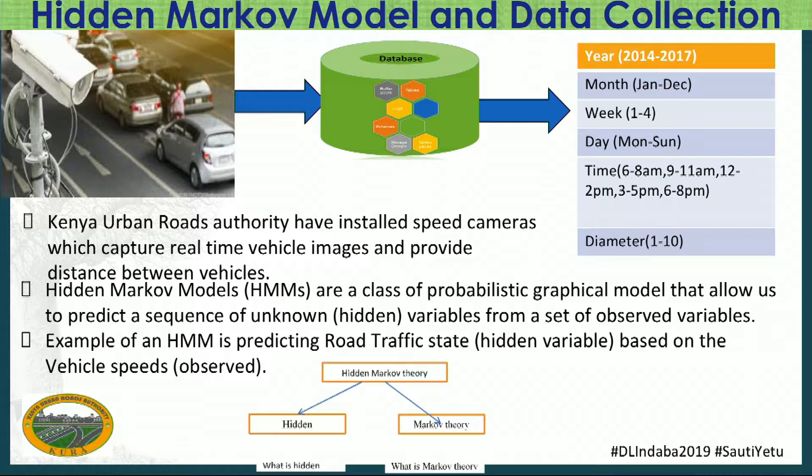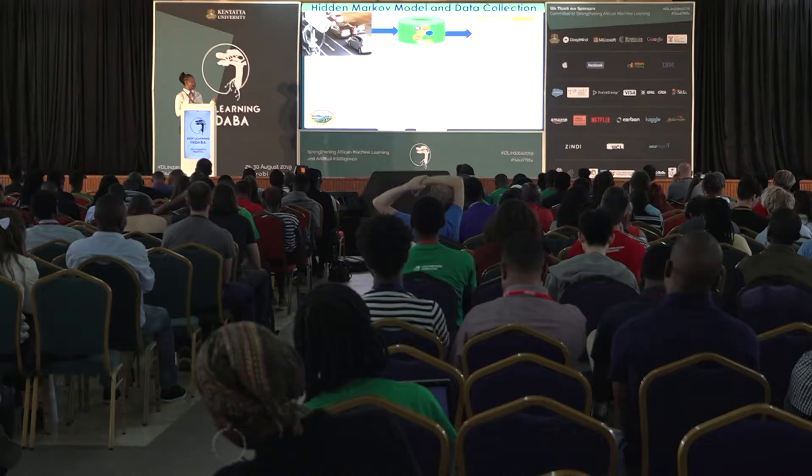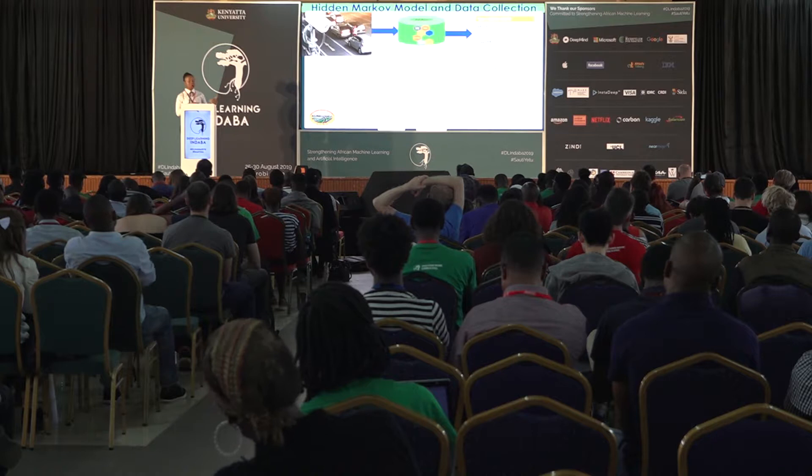My work entails road traffic jam prediction using the Hidden Markov Model theory. The Hidden Markov Model is a class of probabilistic graphical model which allows us to predict a sequence of unknown hidden variables from a set of observed variables. In our case, we use the Hidden Markov Model to predict road traffic state. Road traffic state is the hidden state — what we do not know — but we have observed variables, which are the vehicle speeds, as shown in the diagram.